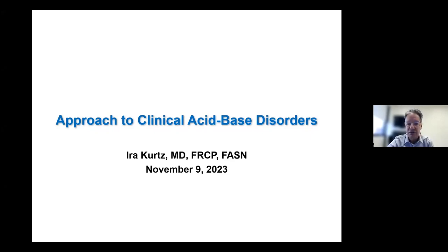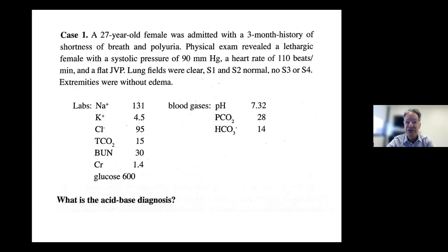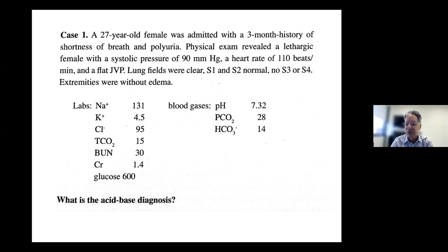If all of you could commit on paper what you think the diagnosis is, and then once you've all written down what you think, we'll discuss it. This is the first case: a 27-year-old female admitted with a three-month history of shortness of breath and polyuria. She was lethargic on physical exam with a low systolic pressure, tachycardia, flat JVP, clear lung fields, and no edema. Look at those numbers and come up with what you think is the correct acid-base diagnosis.